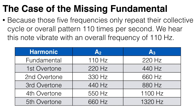This is because those other five frequencies only repeat their collective cycle, or their overall pattern, 110 times per second — we still hear the note vibrate with an overall frequency of 110 Hz. It's tempting to say that this is actually the note A an octave higher, but that's not the case. The note A an octave higher, at 220 Hz, would not have an overtone at 330 Hz or 550 Hz. So we still hear the note A at 110 Hz, even though the fundamental frequency is missing. We have created a fundamental-less note, which is rather interesting.